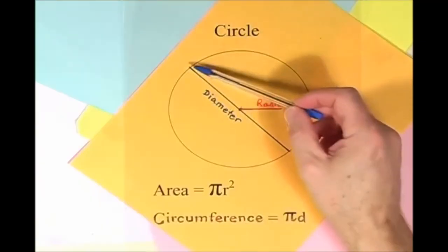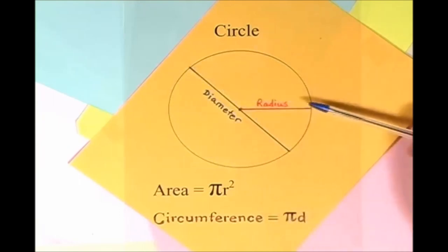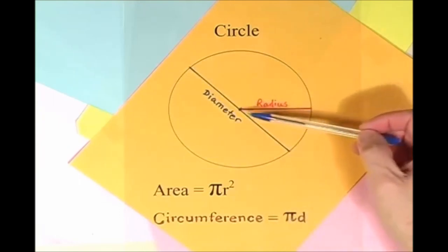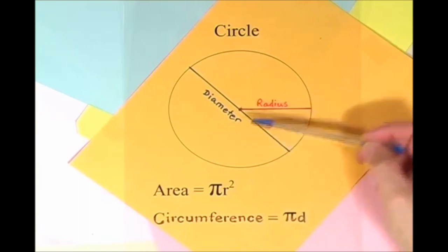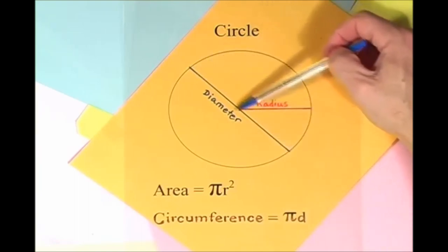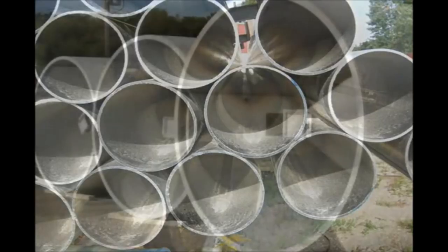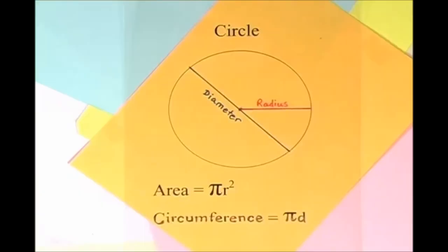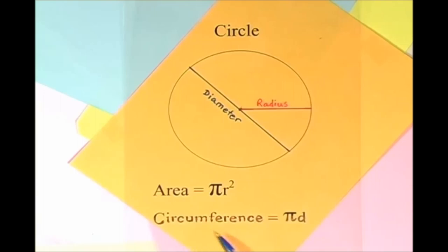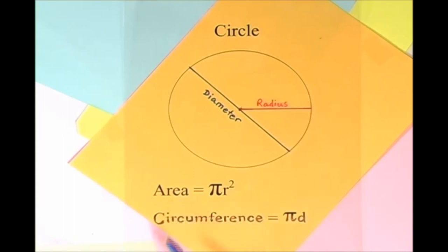Here is a circle, it knows how to get around. It has a radius from center to rim. And its diameter's a line that goes from side to side while passing through the center, now isn't that simple. Pi r squared sounds like area to me, when I need a circumference, I'll just use pi d.